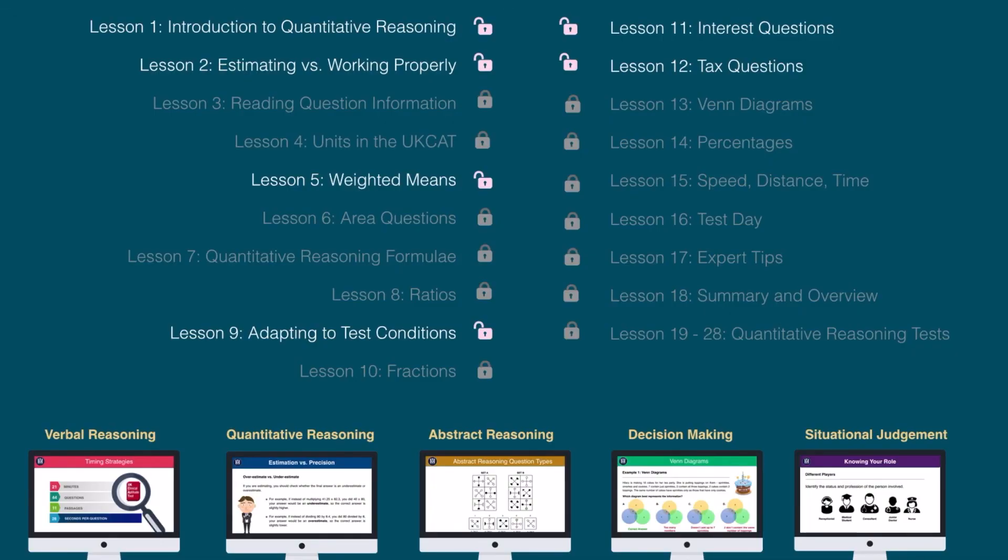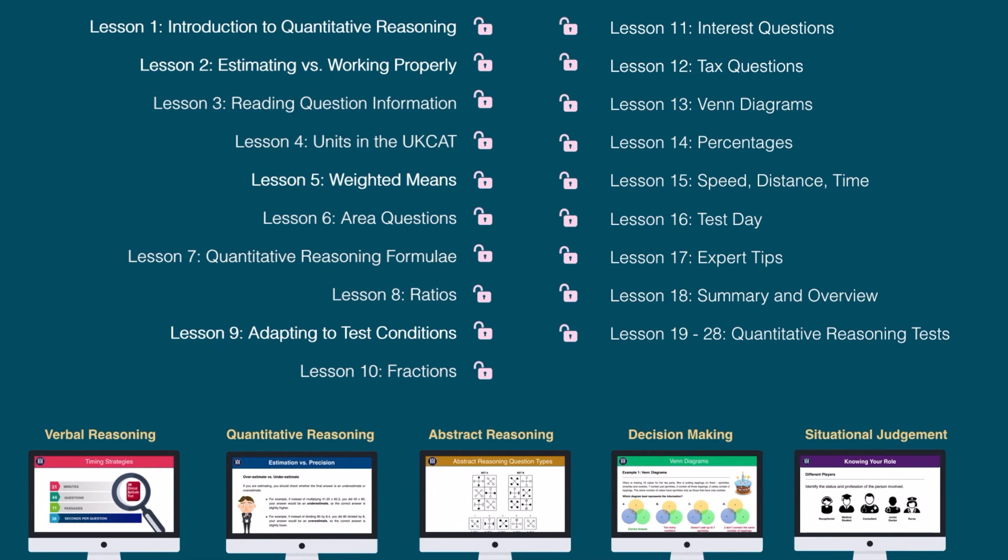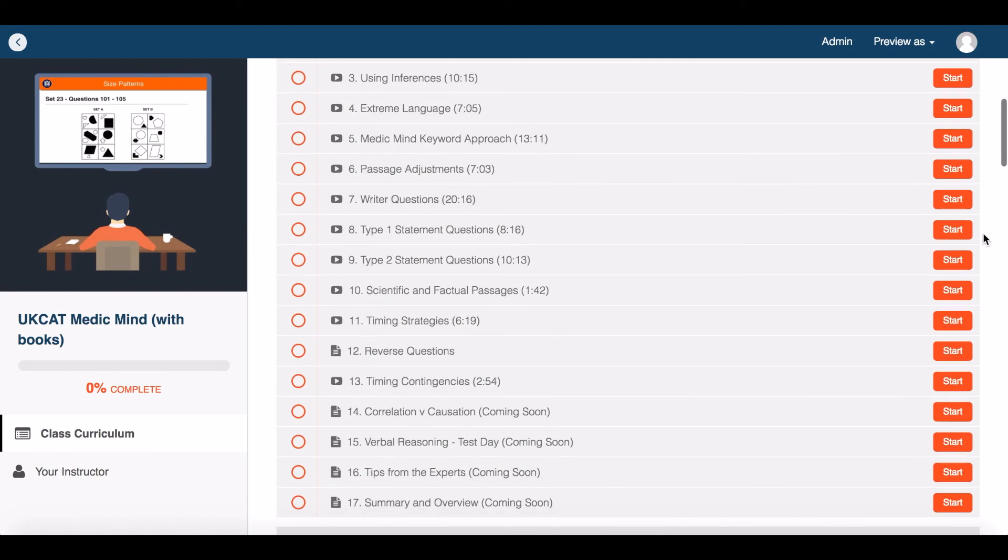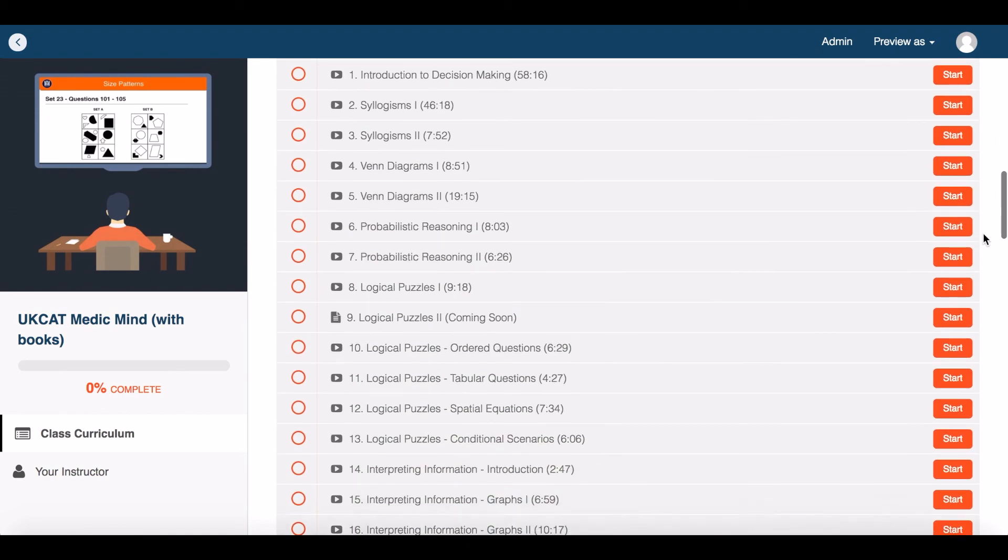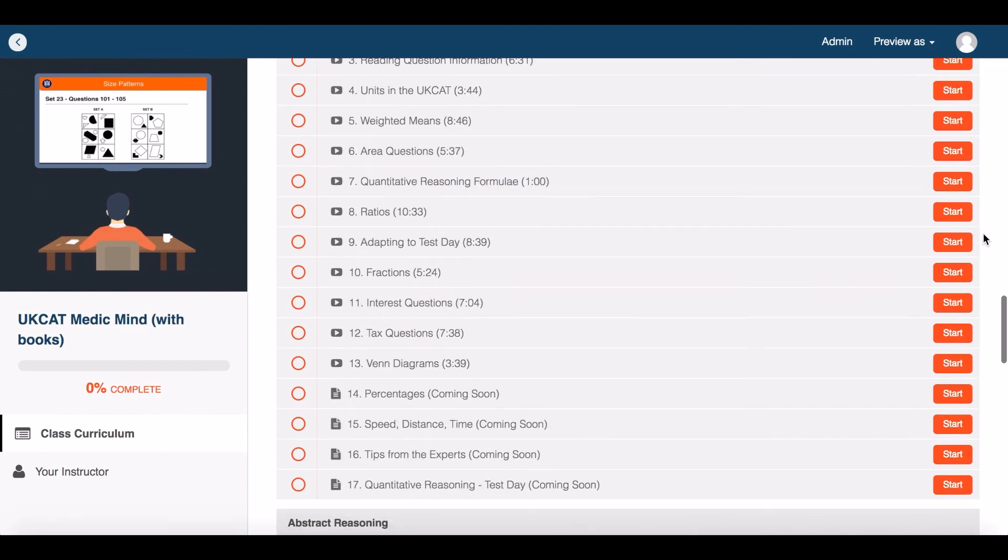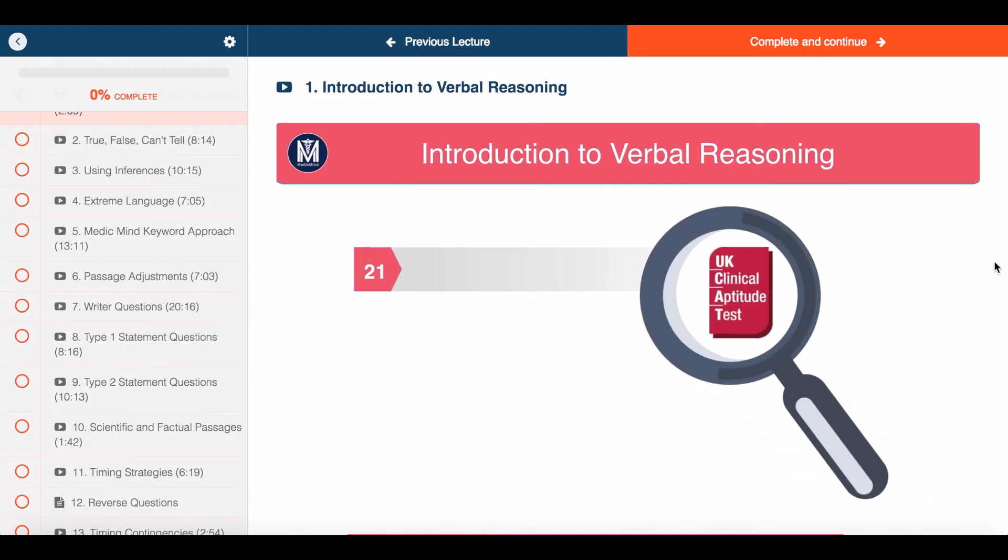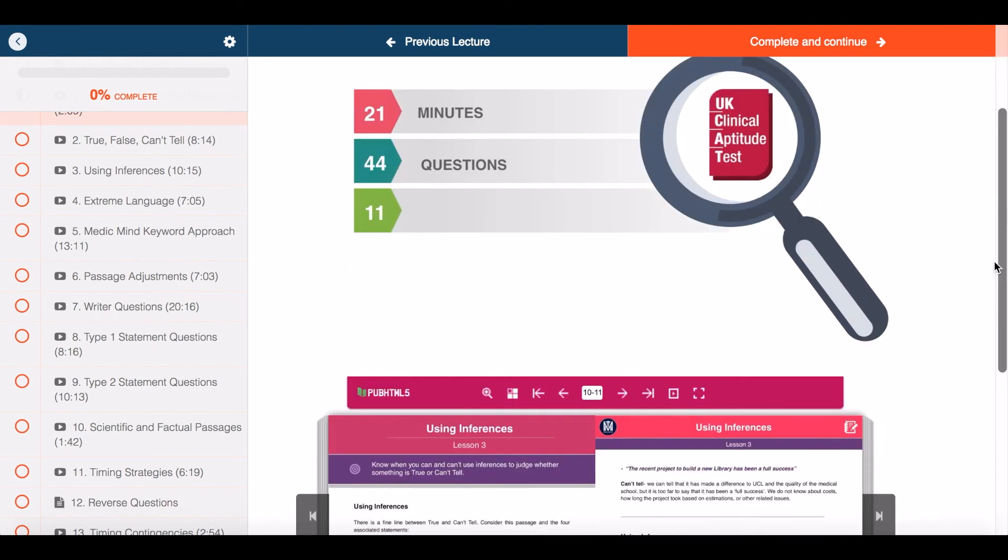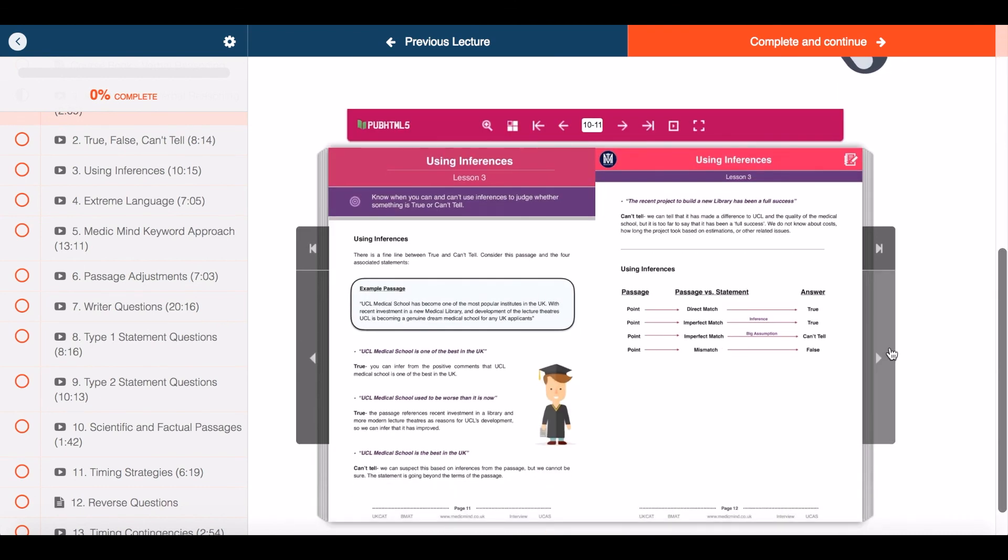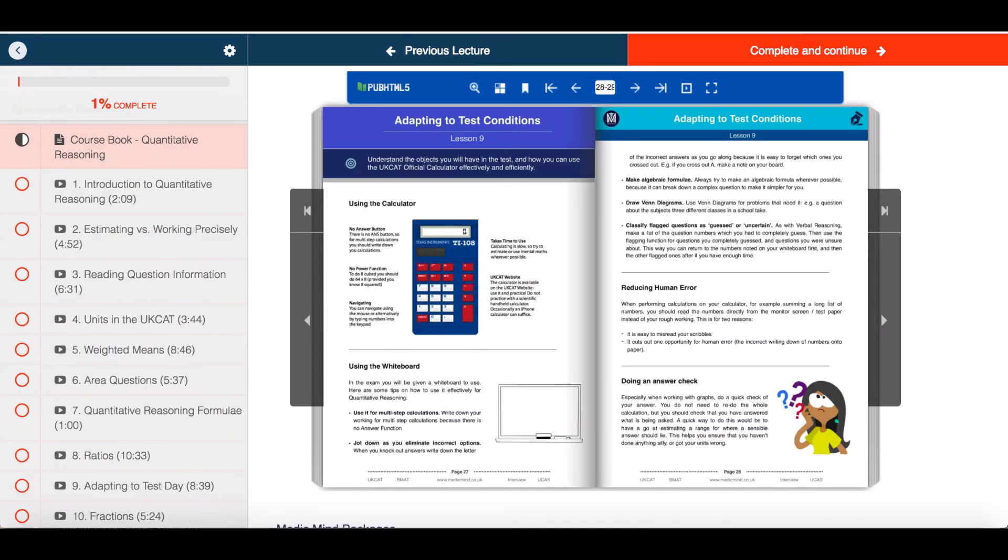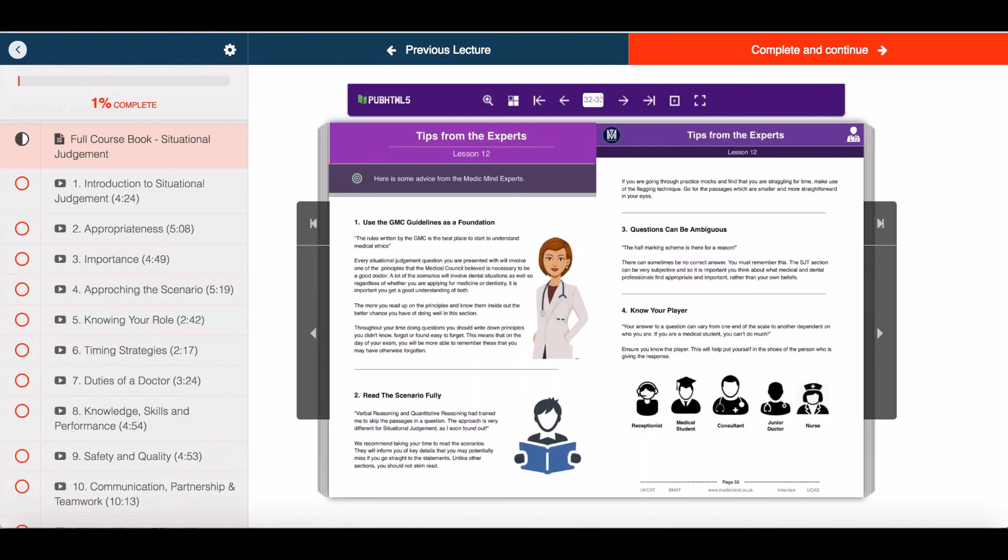Thank you for watching this free Medic Mind tutorial. For £30, you can unlock all 150 tutorials in our online course. The course covers four full days of UKCAT teaching, as well as a course to help you with your personal statement and interview. You're free to ask as many questions as you'd like to our teachers. And with each tutorial, you can read along using our five UKCAT e-books covering 500 pages of theory and questions to guide you every step of the way.